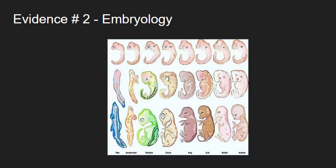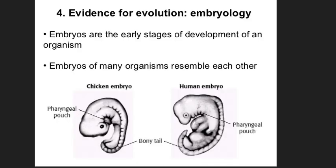The second evidence is embryology. An embryo is the early stage of development of an organism. Scientists viewed that embryos of many organisms resembled each other. So we are going to discuss some of the fossilized eggs that were found by scientists that helped them learn more about the development of species from a long time ago.